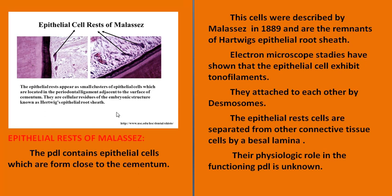These are the epithelial cell rests of Malassez in the PDL. The PDL contains epithelial cells which are formed close to cementum. These cells were first described by Malassez in 1889 and are the remains of Hertwig's epithelial root sheath.